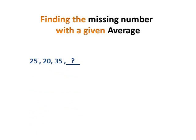So this is an example I have prepared. Say for example you have these numbers: 25, 20, 35, and another number that you do not know. But you're given an average of 30. So basically what this is saying is that we have four numbers. The three numbers we know, we don't know the fourth one, but we know that the average of the four numbers is equal to 30.